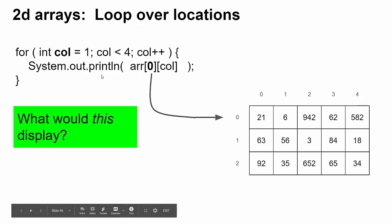You give it a try. Let's say column is a variable that goes from one. It keeps going up by one as long as it's less than four, and I'm going to be displaying array[0][col]. Decide what you think that's going to display.